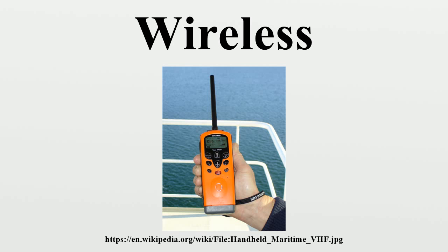Categories of wireless implementations, devices, and standards include: radio communication services, land mobile radio or professional mobile radio systems (Tetra, P25, OpenSky, EDACS, DMR, DPMR), cordless telephony (DECT), and cellular networks (0G through 3G and beyond). Short-range point-to-point communication technologies include wireless microphones, remote controls, IRDA, RFID, TransferJet, wireless USB, DSRC, near-field communication, wireless sensor networks (ZigBee), personal area networks (Bluetooth, TransferJet, Ultra Wideband), and wireless LAN and metropolitan area networks.